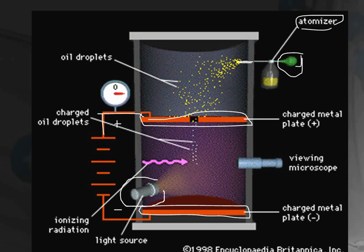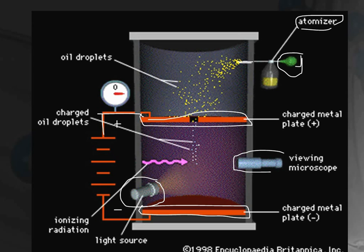There was a source of light so that the experiment could be visible, and there was a microscope situated at the side to observe the downward motion of the drops. By measuring the rate of fall of the drops, he could measure the radius of the oil droplets. The air inside the chamber was ionized by X-rays.